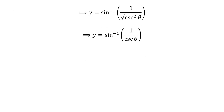We know square root of square of cosecant of theta is equal to cosecant of theta. So, y is equal to inverse of sine of 1 upon cosecant of theta.